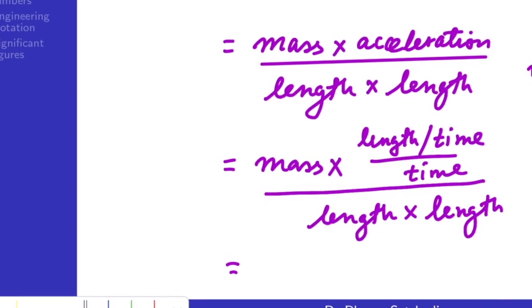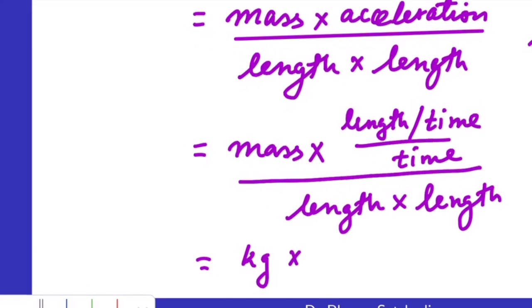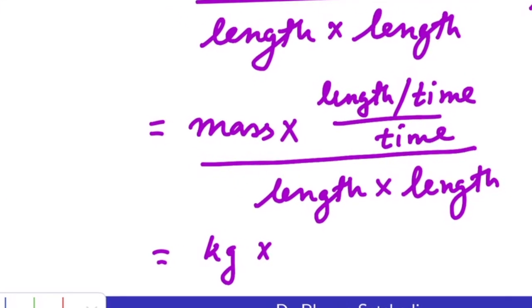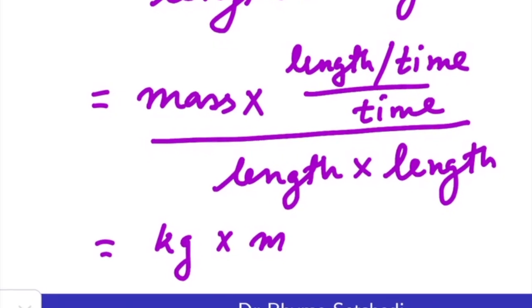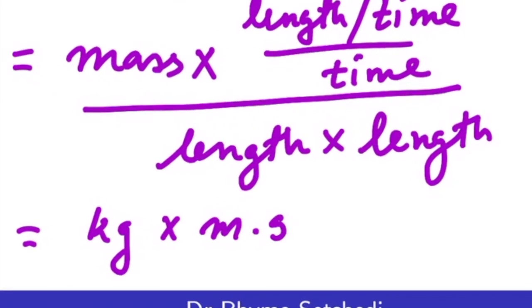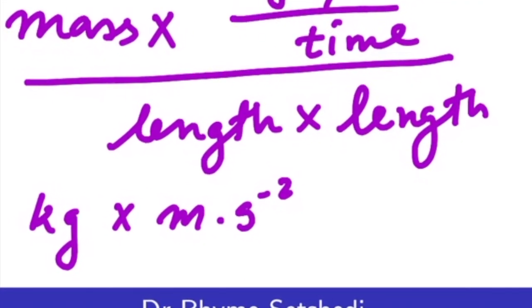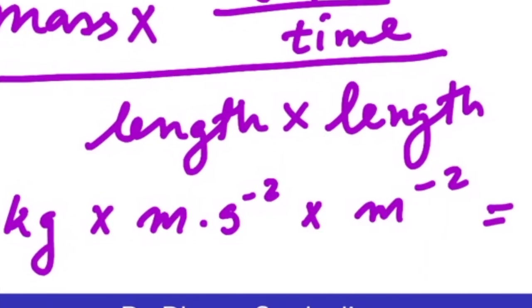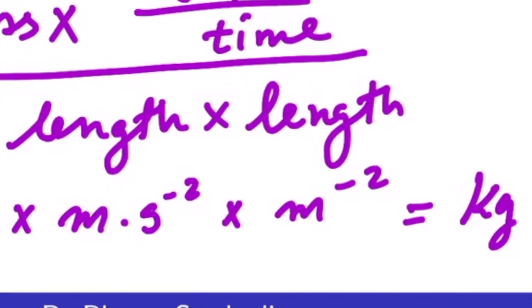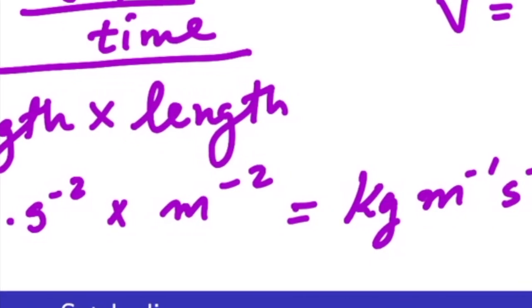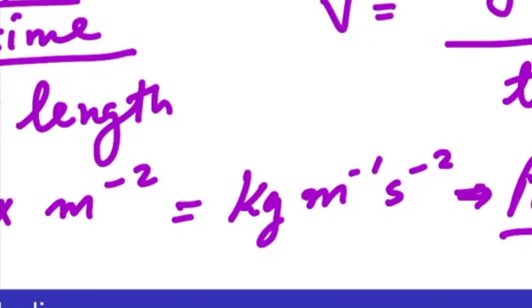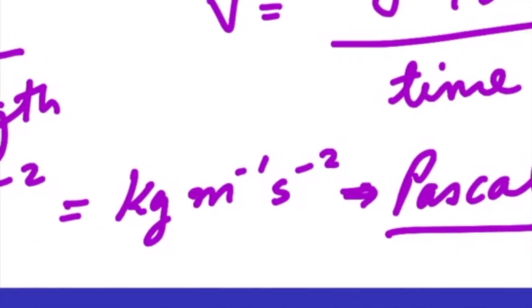Now we can put in the associated base SI units. For mass we use kg. For length we use meters. And then time is s to the power minus 2. And this can be expressed as kg per meter per square second, which is also known as pascals.